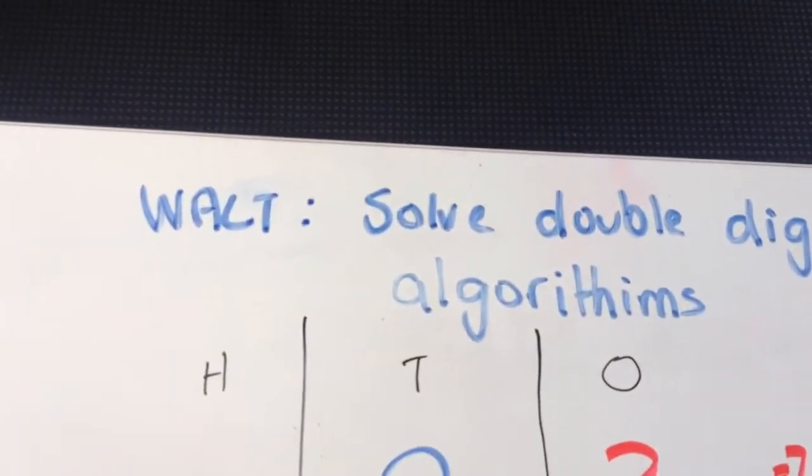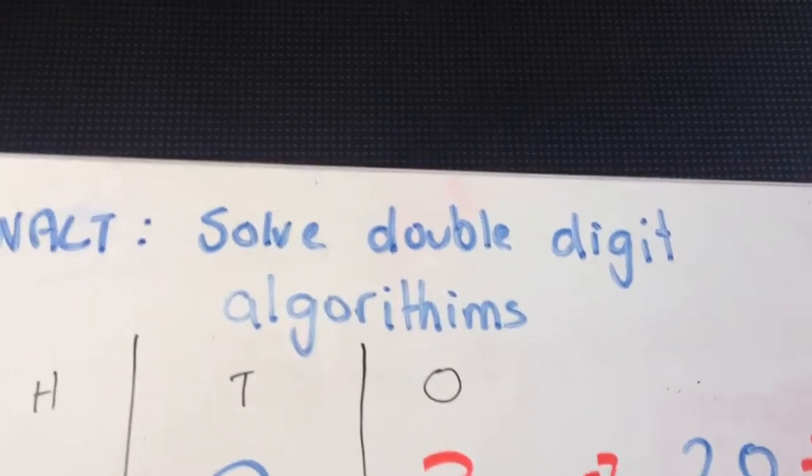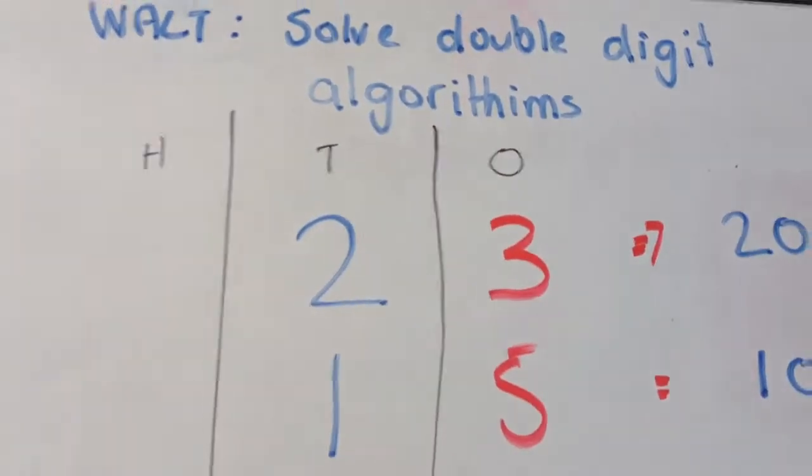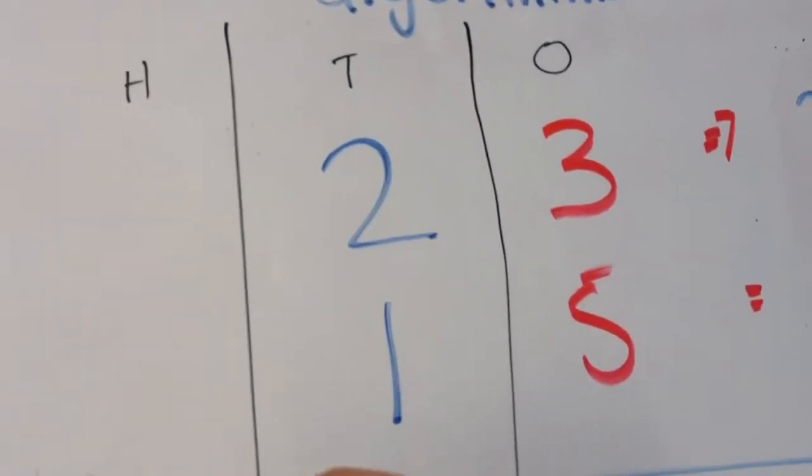Alrighty, we're back again now, and this time our learning intention is we're learning to solve double-digit algorithms. So that's equations like the one we're going to look at at the moment, 23 times 15.